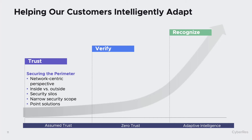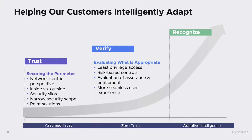As we start maturing out of this assumed trust model and getting into a verification mindset or a zero trust mindset, you start enforcing least privileged access. In the network-centric world, you VPN in, and once you're over that final wall you have complete, usually unfettered access to that portion of the world you can see. A least privileged access model is far superior.